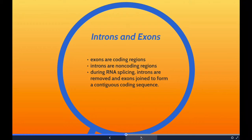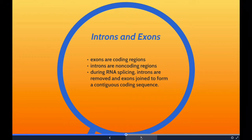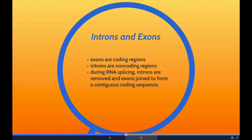During termination, when a stop codon is reached, the ribosome releases the polypeptide. In most eukaryotic genes, coding regions called exons are interrupted by non-coding regions called introns. During transcription, the entire gene is copied into a pre-messenger RNA which includes exons and introns. During RNA splicing, introns are removed and exons join to form a contiguous coding sequence. This mature messenger RNA is then ready for translation.